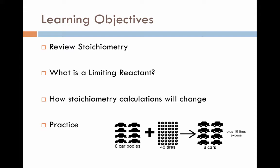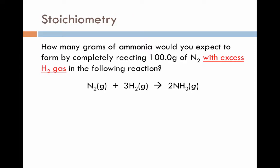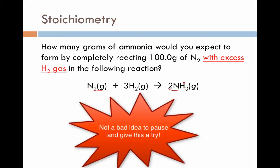The picture at the bottom of the page is an example of this limiting reactant process. What we have here is a stoichiometry problem using a specific reaction known as the Haber reaction — a reaction used to synthesize ammonia, which was part of the agricultural revolution. The problem reads: how many grams of ammonia would you expect to produce by completely reacting 100 grams of nitrogen gas with an excess amount of hydrogen gas? If you want practice, feel free to pause and give this a try.